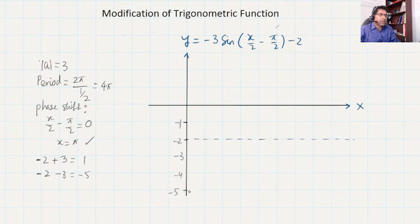It means the minimum point of the graph will be at -5, and what would be the maximum point? At 1. So the graph will not go beyond 1 and not come down less than -5. That's the range of the graph, so 1 to -5 is the range.